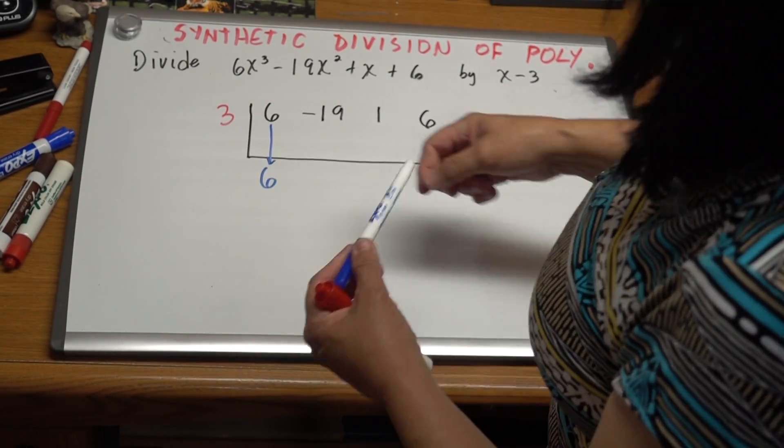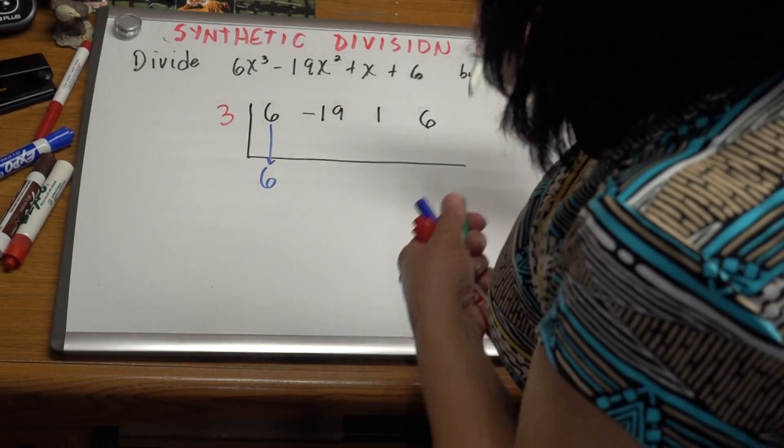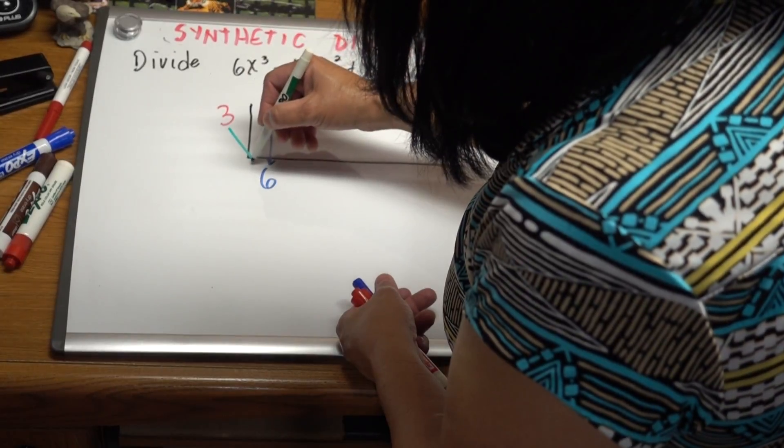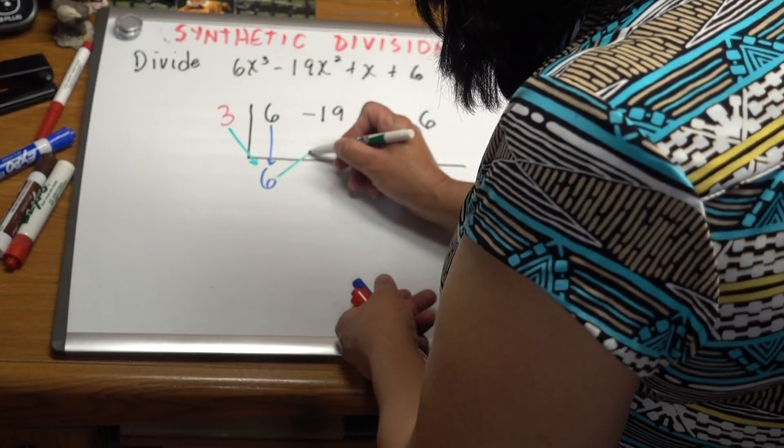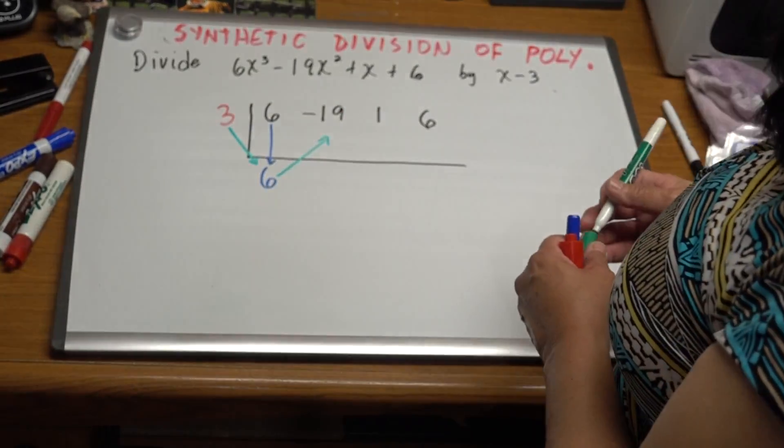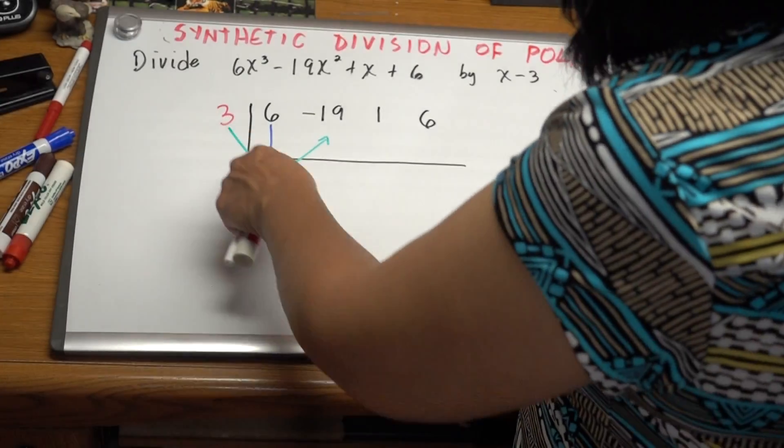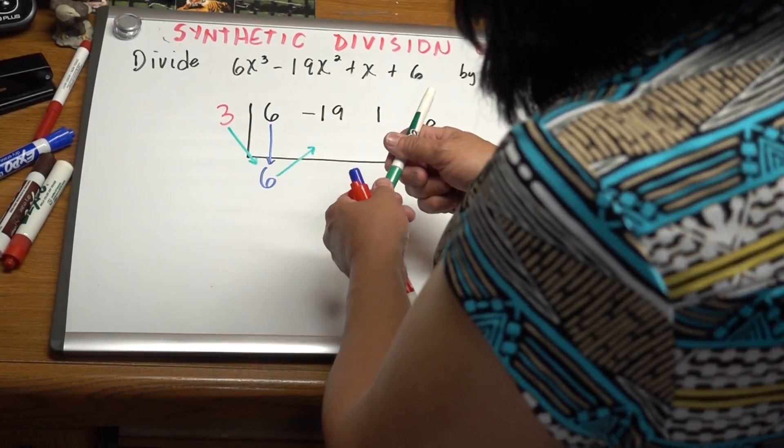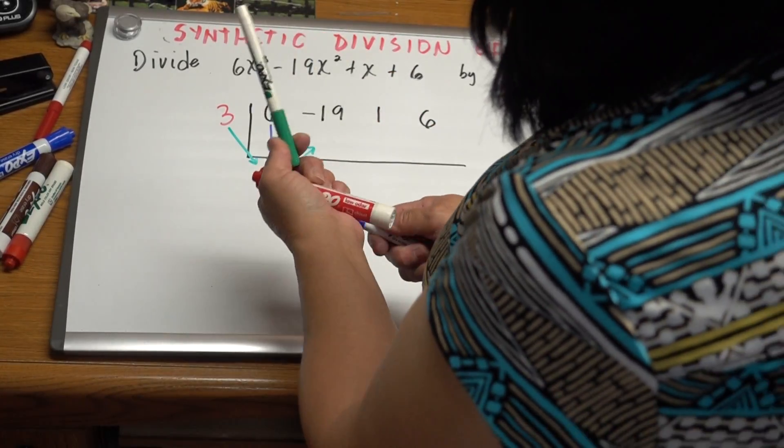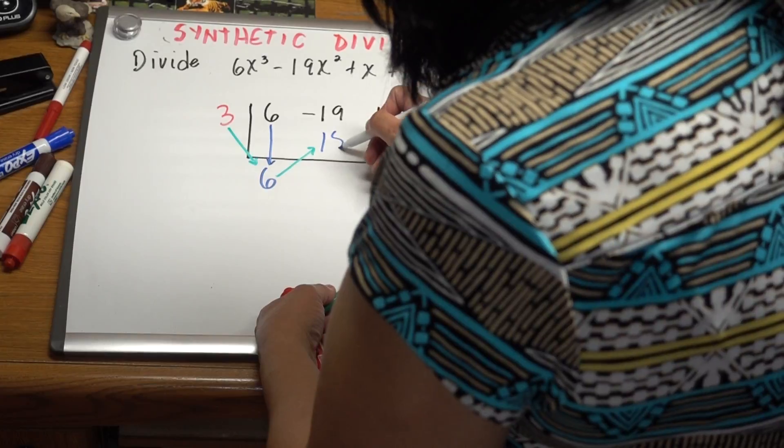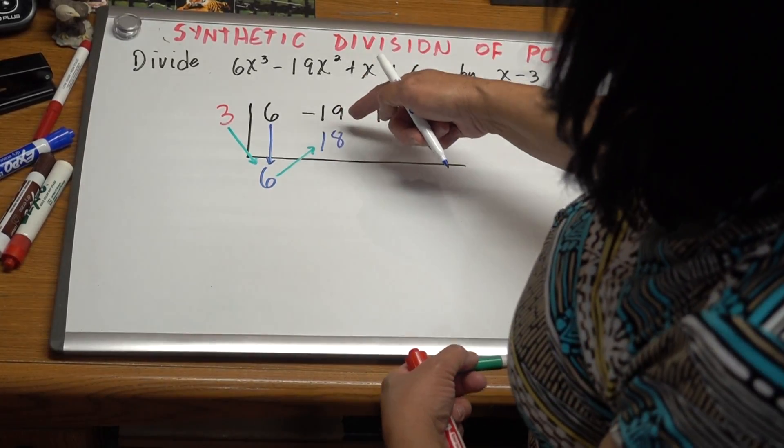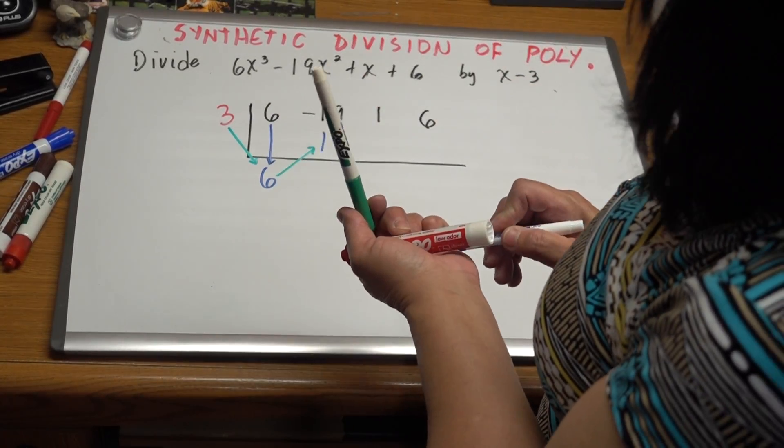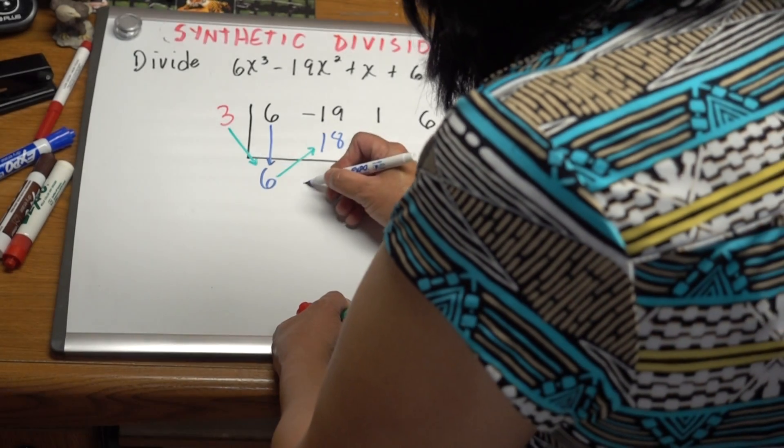Then you're going to multiply. You're going to multiply this number times this one and put the answer right under the next number. So this is 3 times 6 is 18. So you're going to put the answer here, 18. Then you add. -19 plus 18 is -1. So you put the answer right here, -1.